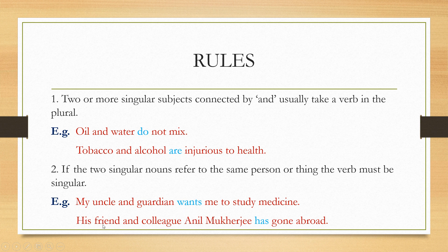Similarly, 'His friend and colleague Anil Mukherjee has gone abroad.' His friend — whoever is his friend, he is his colleague also. So even though it is joined with 'and', it is still a singular subject because it is the same person. His friend and colleague is the same person, so we use the singular verb 'has' here.